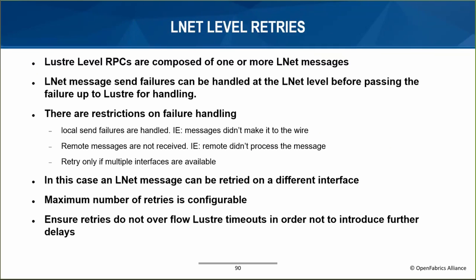The other aspect of the LNet health feature is LNet-level retries. This is pertinent when the local node or the peer has more than one interface. LNet will attempt to resend a failed message over another interface. However, not all send failures trigger a retry: if the message failed to egress the node we retry, but if it made it on the wire LNet will not resend to avoid duplicate messages. Portal RPC has an RPC-level retry mechanism which kicks in when LNet reports a failure. LNet retries are there to avoid heavier error recovery mechanisms when possible.